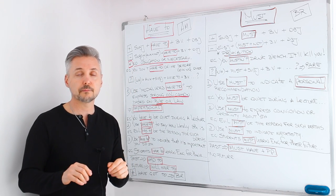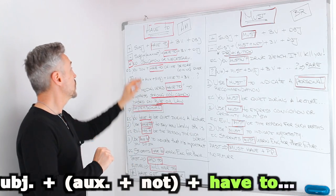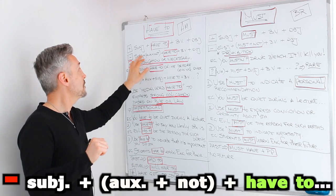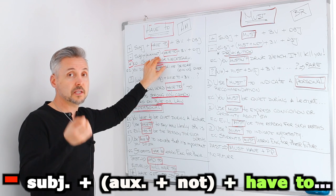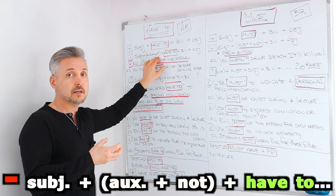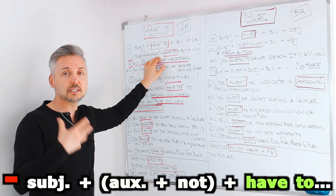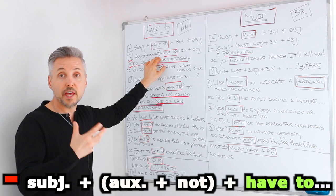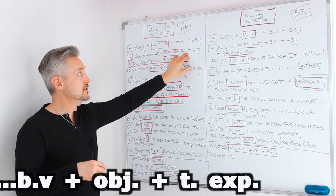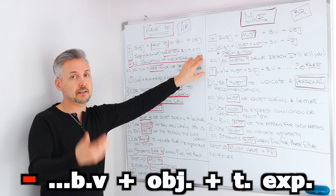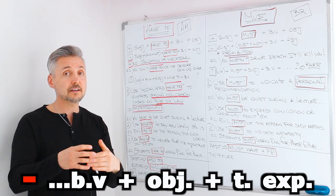When we write a negative sentence, we need the subject, plus the auxiliary, plus not — the auxiliary of the tense we are using in this case, so it could be do, does, did, or will, etc. — plus have to, plus the base of the verb, plus object, and then the time expression.